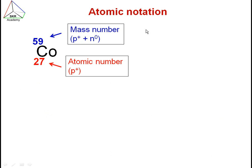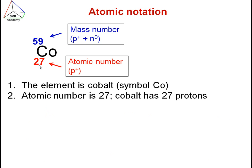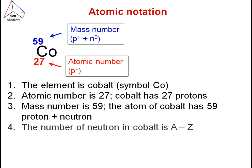Let's see what other information we can get from atomic notation using the example of cobalt. The element symbol tells us it is cobalt, and the atomic number is 27, meaning it has 27 protons. The mass number is 59, meaning the atom has a total of 59 protons and neutrons. To calculate the number of neutrons, we subtract the atomic number from the mass number: A minus Z equals 59 minus 27, which equals 32 neutrons.